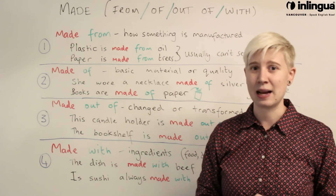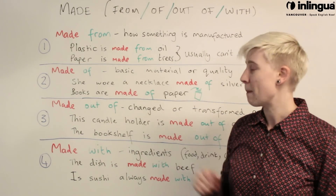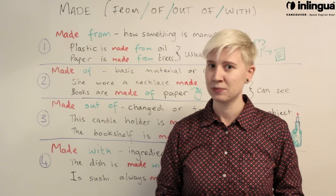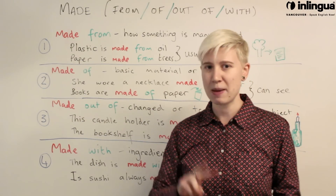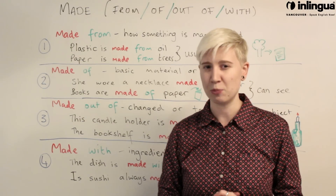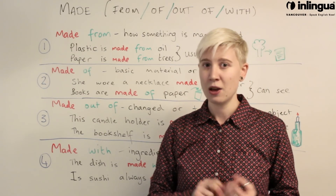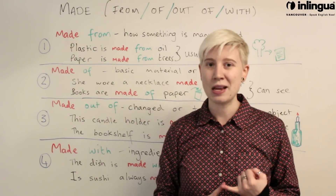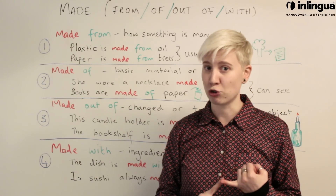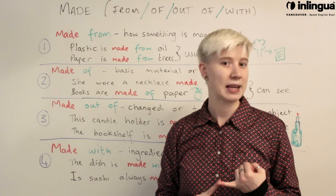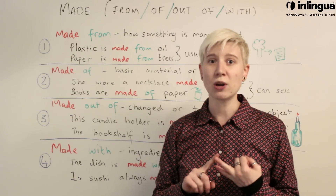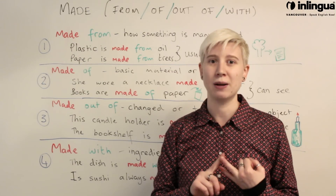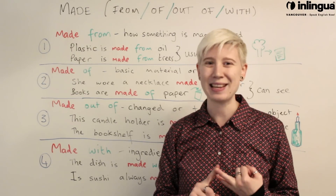My second example: 'Books are made of paper.' I've used paper twice to help you see the difference. Paper is made from trees — I cannot see the tree. Books are made of paper — I can see the paper.